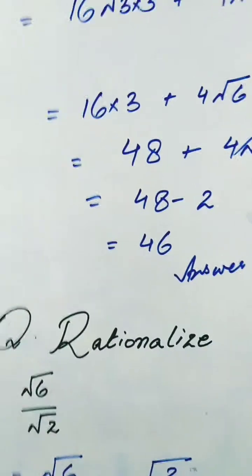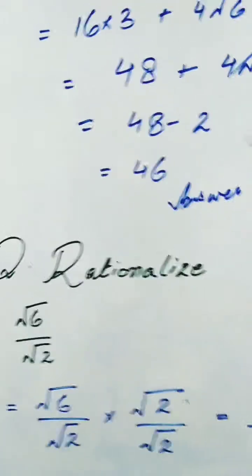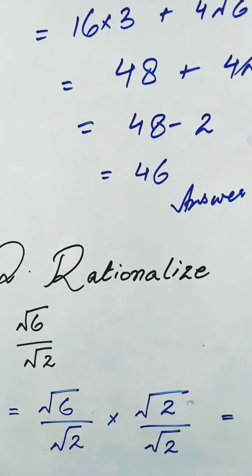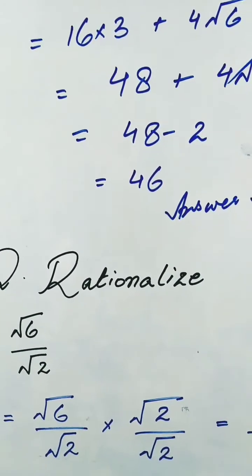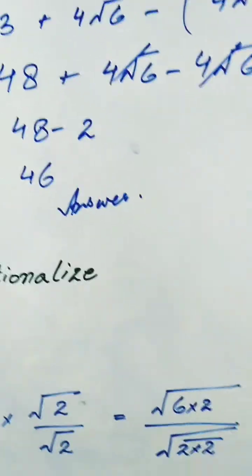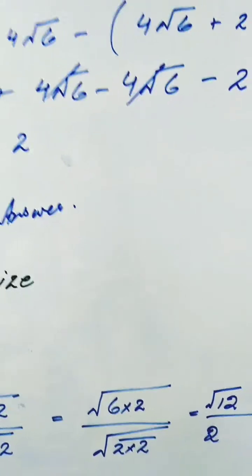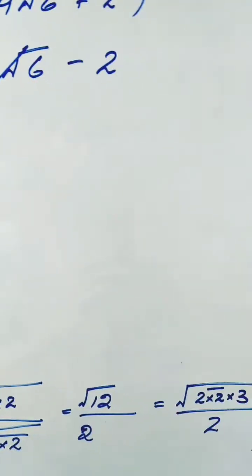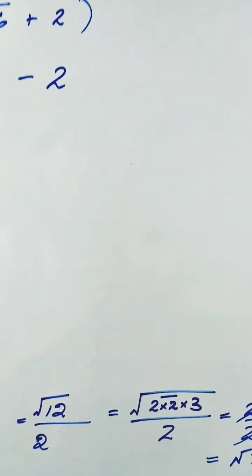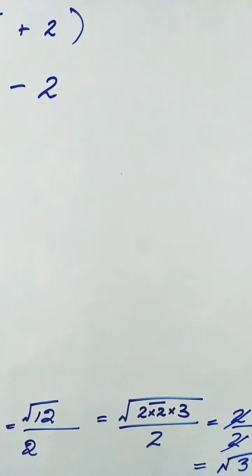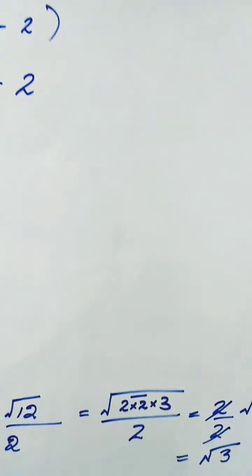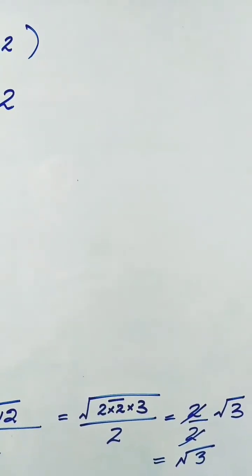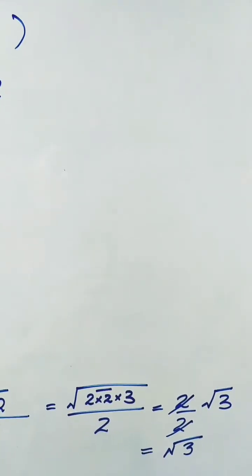Now we will perform rationalization — removing the root from the denominator. We have the question: √6 divided by √2. To remove the root from the denominator, we multiply and divide by √2 over √2. We get √(6 × 2) divided by 2. The factors of 12 are 2 × 2 × 3, so root 2 comes out of the root, leaving √3 inside. That root 2 divides by the 2 in the denominator, and the answer is √3.